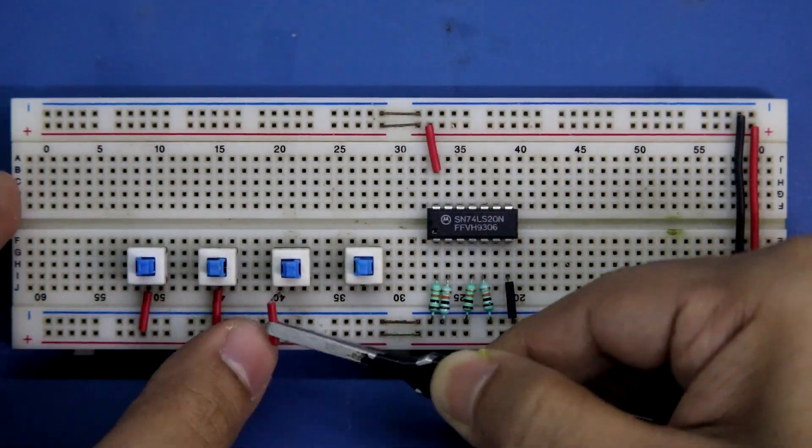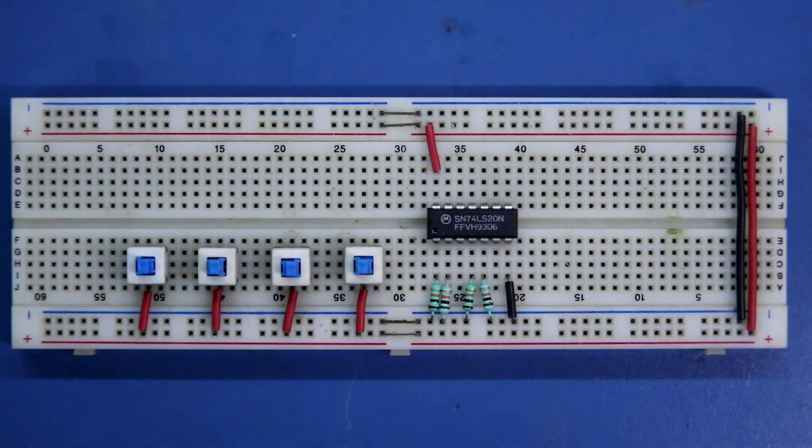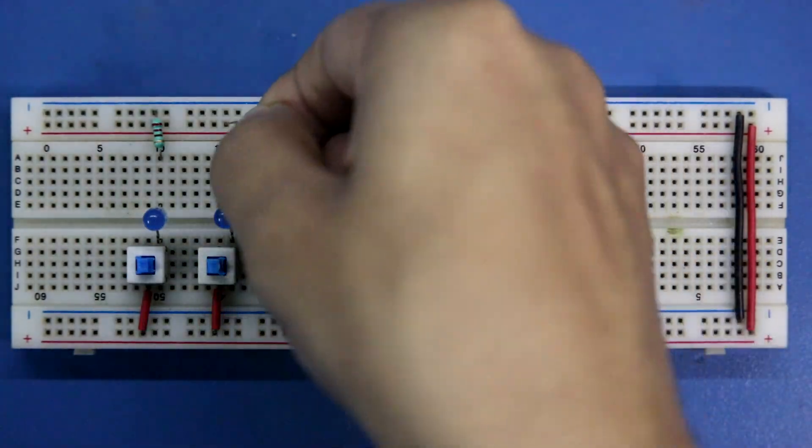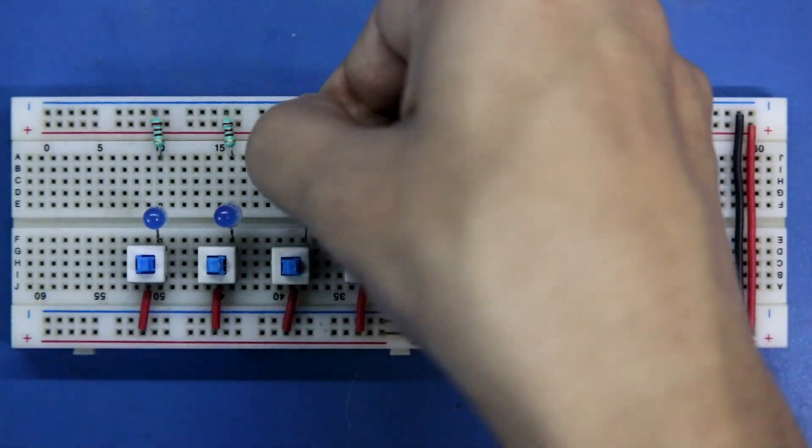One pin of the switch is connected to the positive rail connecting the input LEDs. The positive is connected with the switch and resistor is connected with the negative pins and then it is connected to the ground.